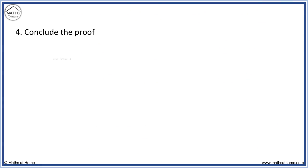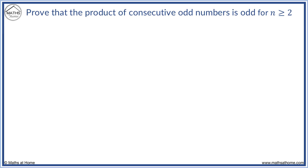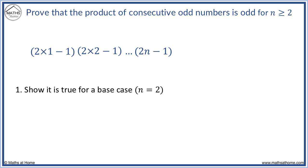Now we conclude the proof as before. Here is a final example. We start by forming a sequence of odd numbers: 2 times 1 minus 1, 2 times 2 minus 1, and so on until 2 times n minus 1. This is how we represent odd numbers in induction — 2 times a number minus 1. Our first step is to show it is true for the base case of n equals 2. Substituting n equals 2, we get 2 times 1 minus 1 multiplied by 2 times 2 minus 1, which equals 3. This is odd, so the base case is true.